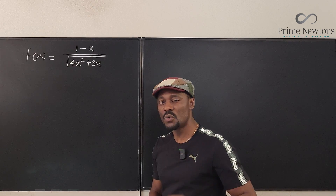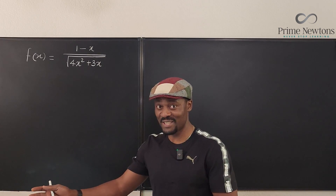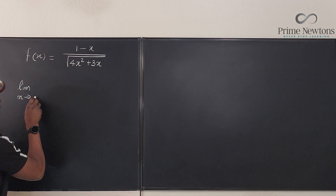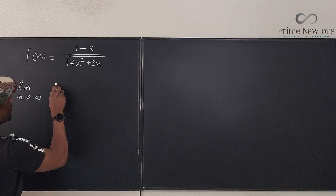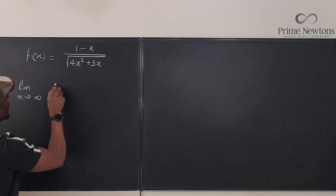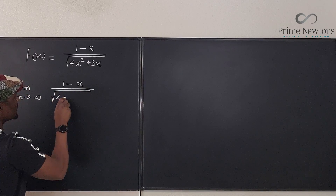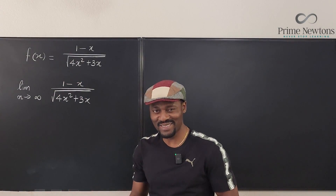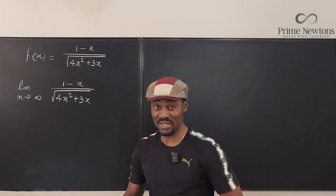Let's find the first horizontal asymptote — the easy way — going to positive infinity. We're going to compute the limit as x goes to positive infinity of the function (1 - x) divided by the square root of (4x² + 3x). I'm beginning to love this new method I just thought of, because it's going to save you from all the confusion.